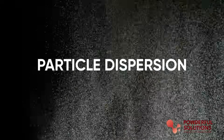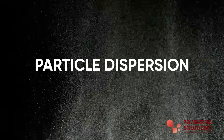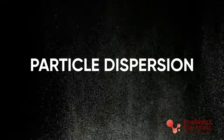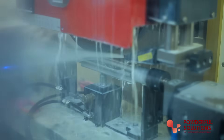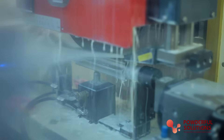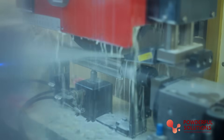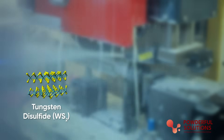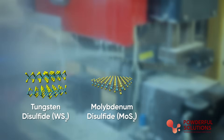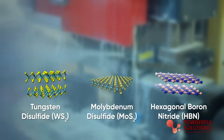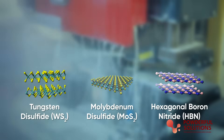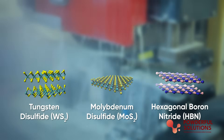You might be wondering what makes particle dispersion so crucial for lubricant performance. Well, it's all about ensuring the effective delivery of the additive particles — like WS2, MoS2, and HBN — directly to the metal surfaces that need them the most.